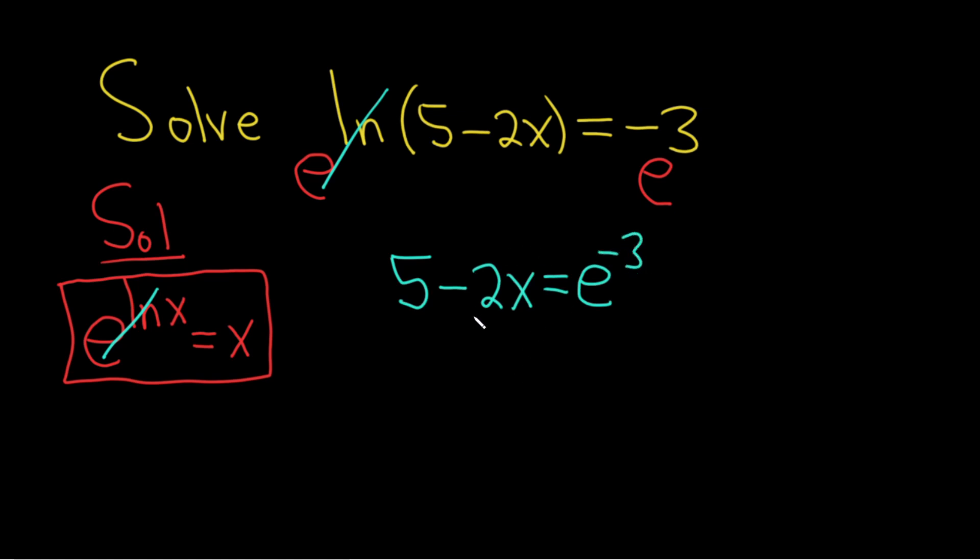We're looking for x, so we need to isolate it. Let's go ahead and subtract 5 from both sides. These go away, so we have minus 2x equals e to the negative 3 minus 5.